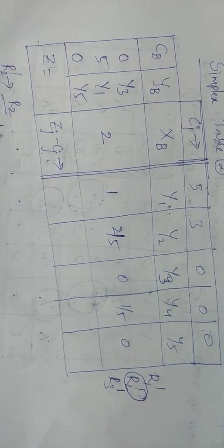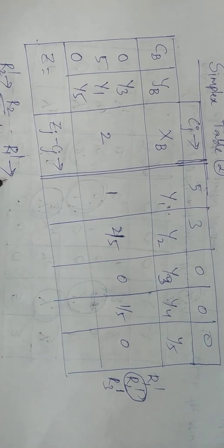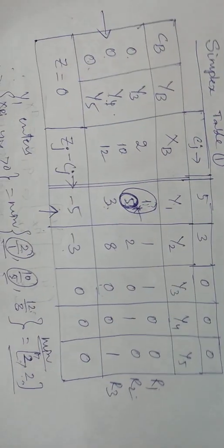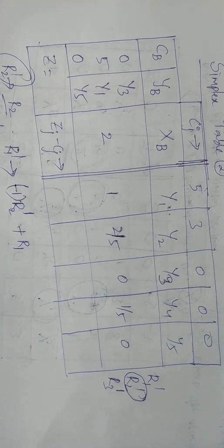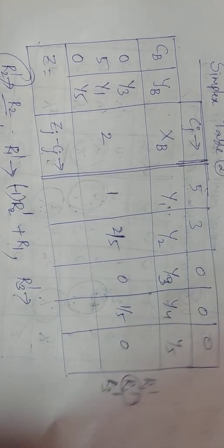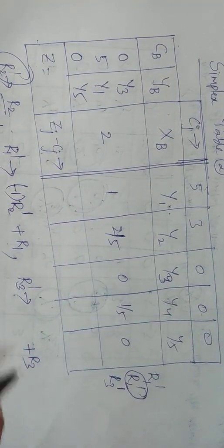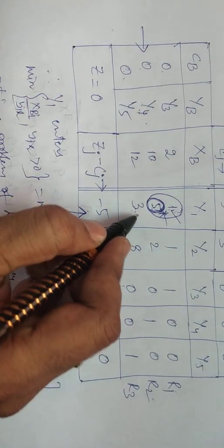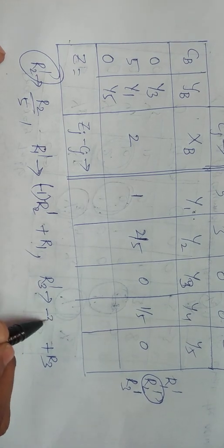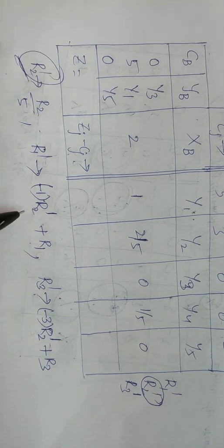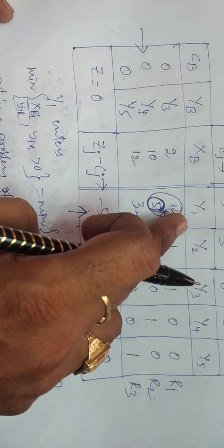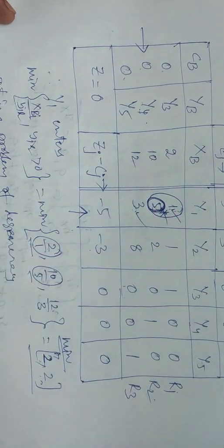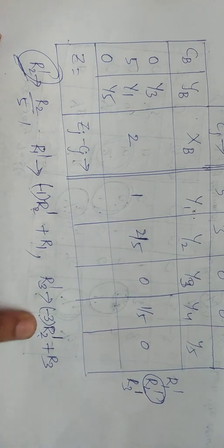Please calculate these values. For R1 dash, the element 1 is to be converted to 0, so the operation is R1 dash = R1 + (−1) × R2 dash. For R3 dash, element 3 is to be converted to 0, so the operation is R3 dash = R3 + (−3) × R2 dash. We multiply −1 with R2 dash for R1 and −3 with R2 dash for R3.